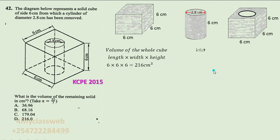Then from there, we work out the volume of the cylinder. And the formula of working out the volume of a cylinder is pi r squared times height. So for pi, we are supposed to take 22 over 7. Now radius, we should work with the diameter which is given, which we should divide by 2 to get the radius of 1.4 cm. And the height is 6 cm.